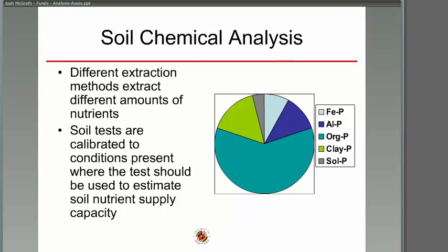Here's a pie representation of total soil P. You've got a big chunk of organic P — which can be 50–75% of soil phosphorus — then aluminum phosphates, iron phosphates, clay-held phosphates, and then that tiny 1% solution P. Different extractants grab different pieces. For example, the Mehlich-3 test is pretty good at getting some organic P, better than Mehlich-1 which was previously used. So the soil test is calibrated to the specific location and the specific test — you estimate the nutrient supply capacity, not directly measure it.